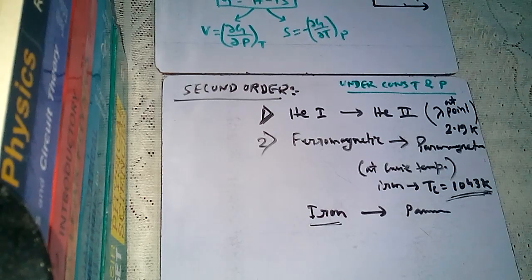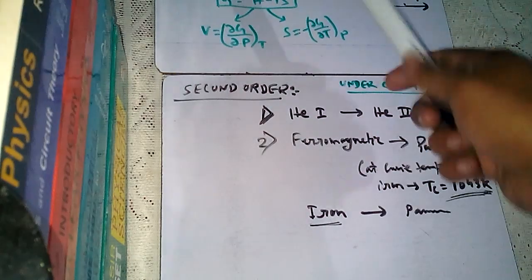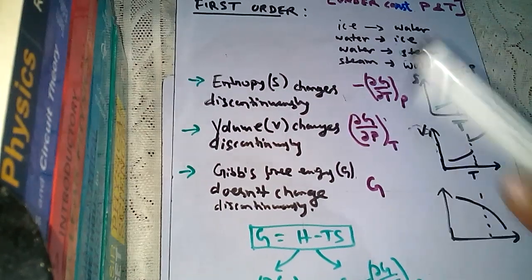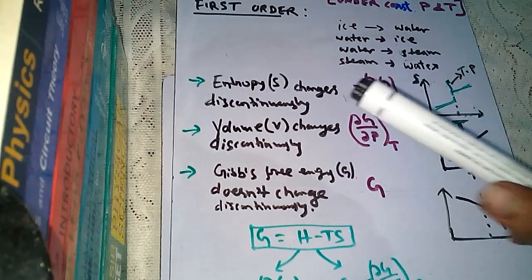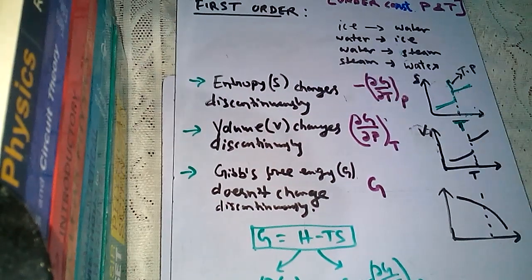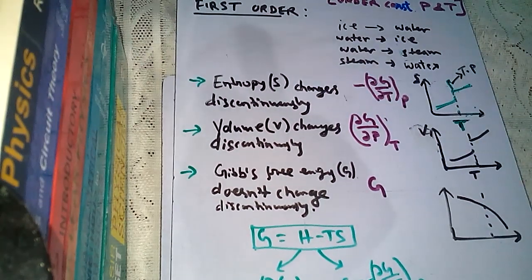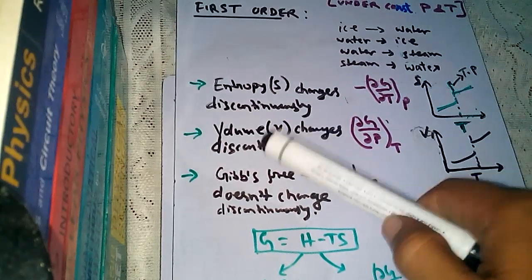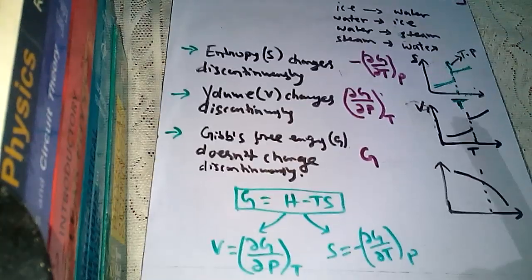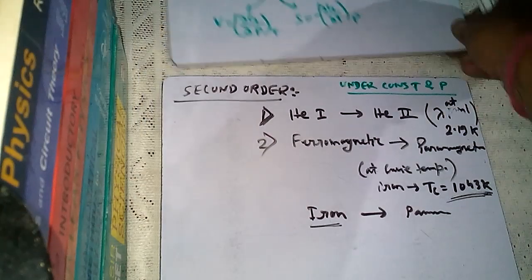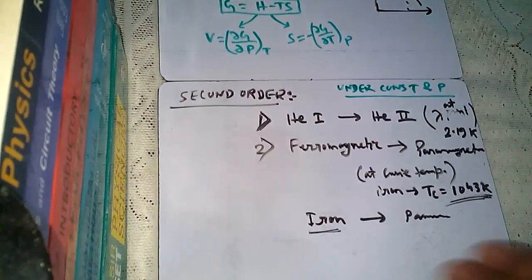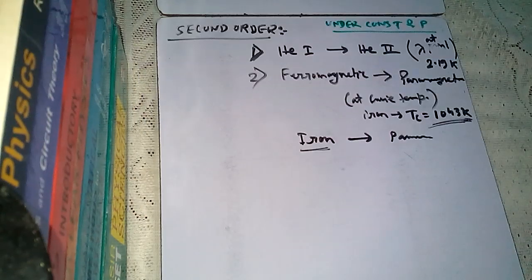Comparing with first order transitions: in second order phase transitions, entropy does not change discontinuously, and volume does not change discontinuously either. Now let us look at the graphs for second order phase transitions.